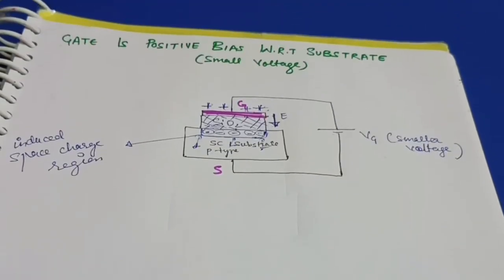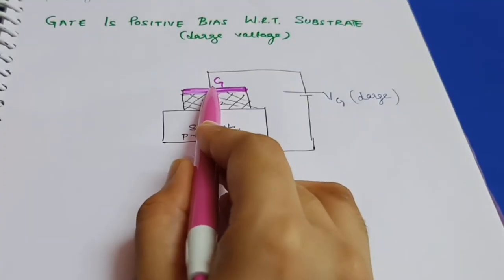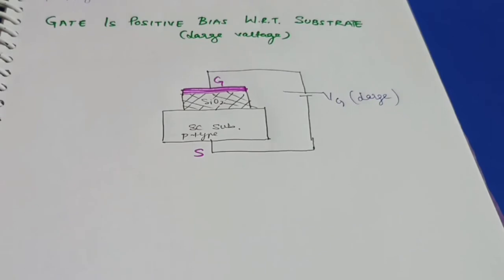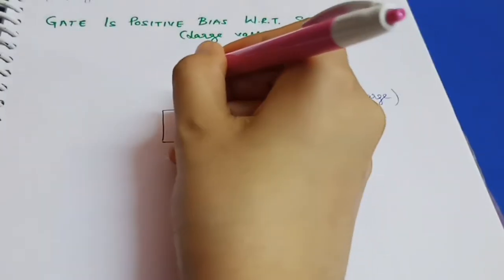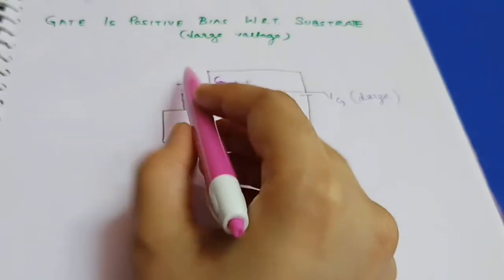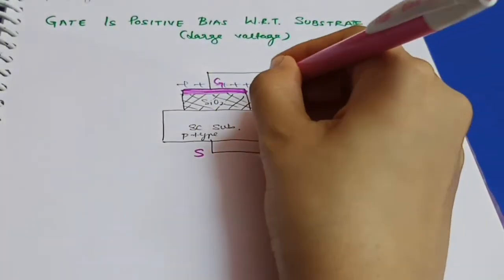Now let's discuss the third case, where the gate is positively biased with respect to the substrate but with a larger voltage. The positive terminals of the battery are connected to the gate terminal and the negative terminals to the substrate. Large positive charges are created on the gate plate, so a large electric field intensity is induced directed in the downward direction.